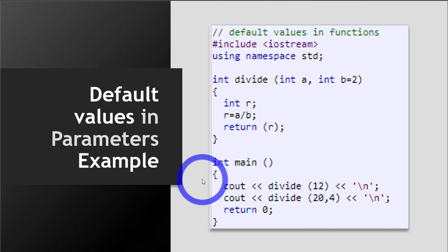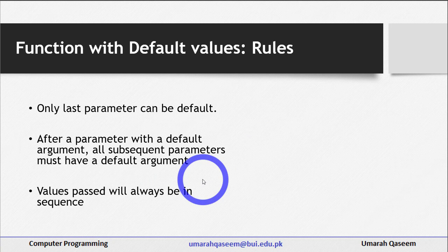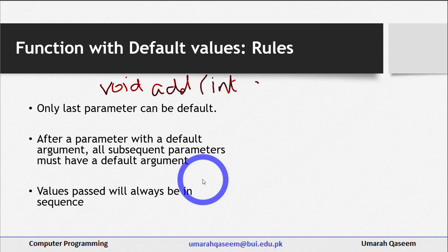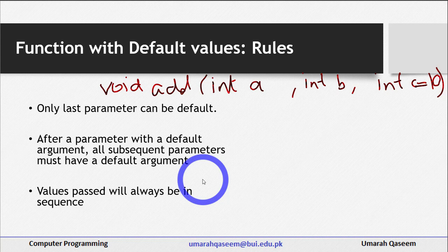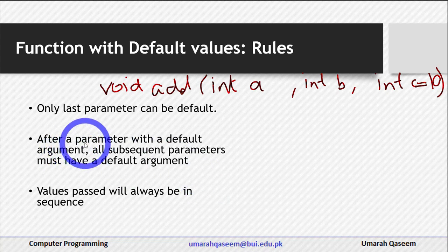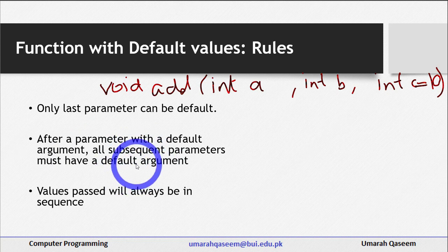There are certain rules for default values and parameters. The first rule is: only the last parameter can be default. For example, if we have a function called add with three parameters a, b, and c, only the last parameter can have a default value. The second rule is: if a parameter has a default value, all the subsequent parameters after it must also have a default argument or value.